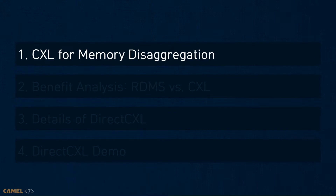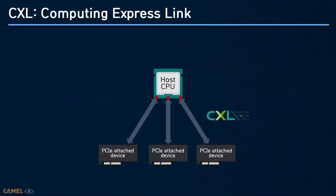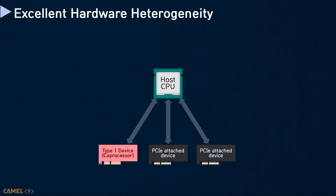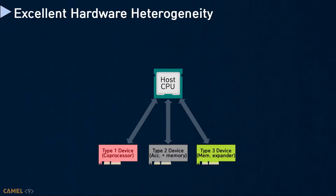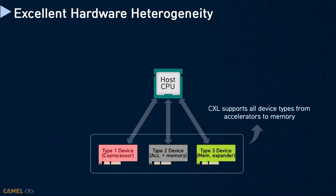Now I will explain what CXL is and how it can be used for memory disaggregation. Compute Express Link, or CXL, is an open industry standard for cache-coherent interconnect based on PCI Express. CXL allows a device to cache data stored in host memory without breaking cache coherency. This kind of device is defined as Type 1 in CXL, and a coprocessor can be an example of a Type 1 device. CXL also allows the host to cache data stored in device memory; such a device is called Type 3. Type 2 device mixes Type 1 and Type 3, and an accelerator with internal memory, like a GPU, can be an example of a Type 2 device.